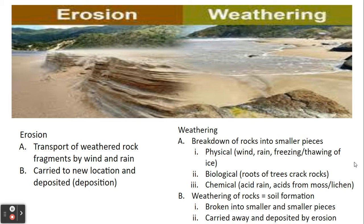Now, how does soil form? There are two factors that play a role, and that is going to be weathering and erosion. We've kind of talked about soil formation before, back in Unit 1, when we discussed ecological succession — specifically primary succession — where you tend to have bare rock in the ecosystem. Over time, that bare rock is actually broken down and changed into layers of soil, usually via a pioneer species such as mosses or lichens.